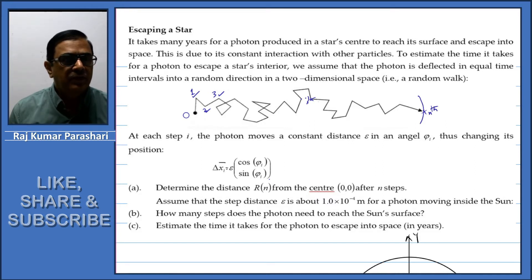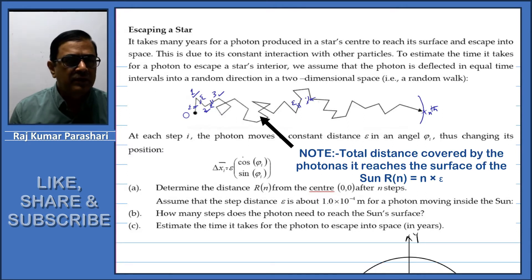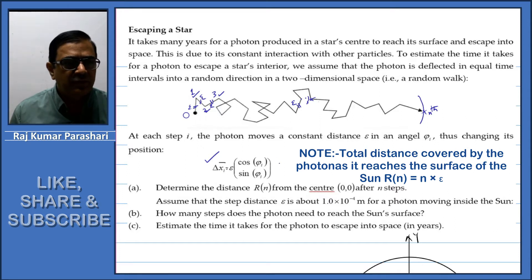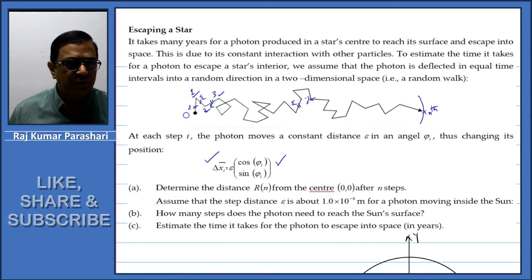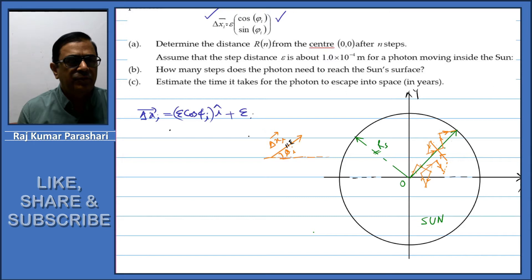It is given that the distance between any two interactions always remains constant. Effectively, this distance, this distance, distance between the third and second interaction, and so on so forth — this distance always remains constant. According to the problem, the displacement just before the ith interaction is given by this relation, and we should be able to write this displacement as: ΔXi vector equals ε·cos(φi)·î plus ε·sin(φi)·ĵ. This is relation number one.